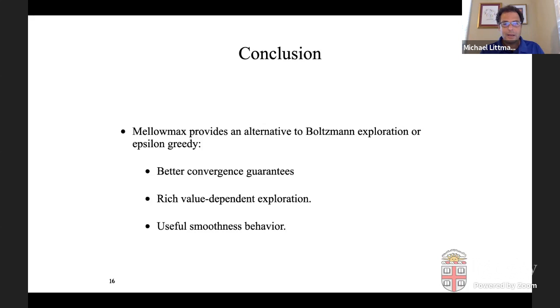That this mellow max provides an alternative to Boltzmann exploration or Epsilon greedy with better convergent guarantees, rich value dependent exploration like Boltzmann has. And just sort of some useful smoothness properties that seem to make things conditionally much more stable in general. Thanks.